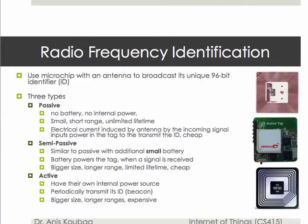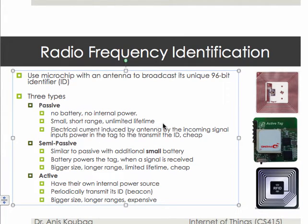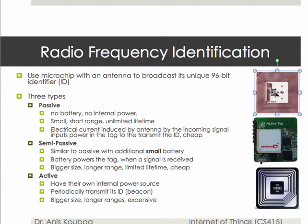There are three types of RFID systems: passive RFID, semi-passive RFID, and active RFID. Passive RFID systems don't have any battery or internal power at all. These RFID tags are small in size, have a short communication range, and have an unlimited lifetime because they don't rely on any internal power or battery.